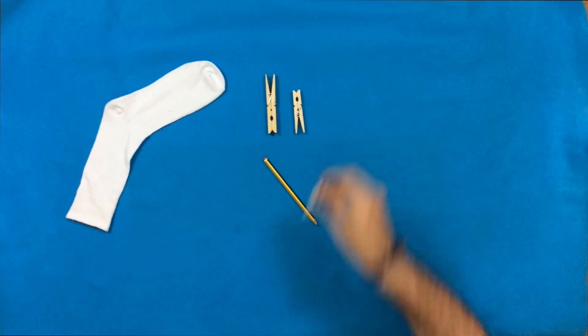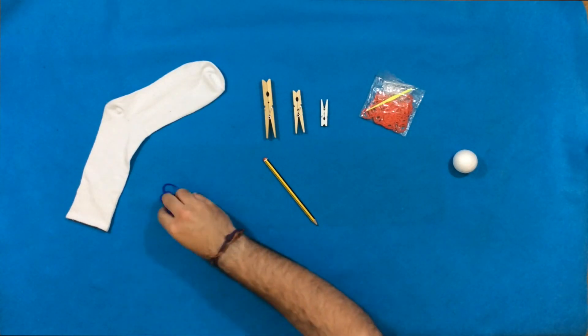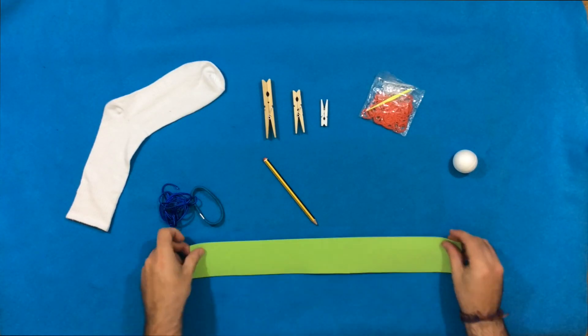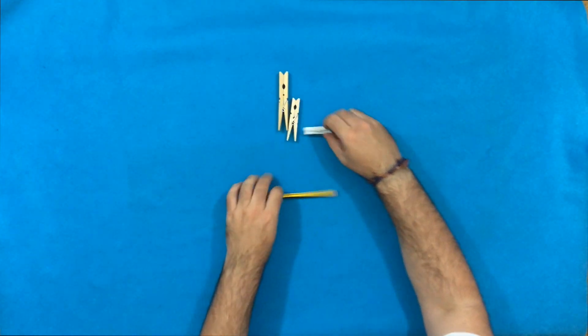Vamos con los materiales que vamos a usar para realizar diversos adaptadores de agarre al lápiz. Un calcetín, pinzas de ropa, gomitas de esas de las pulseras, una bola de pórex, una cuerda suave, un coletero y un trozo de goma eva.